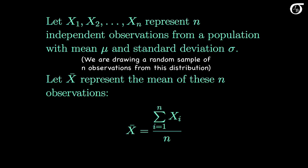The value of X bar will depend on the sample we draw, and if we were to repeatedly sample from the population, then the value of the sample mean X bar would vary from sample to sample. So the sample mean X bar is a random variable with a probability distribution, and we call that probability distribution the sampling distribution of X bar.